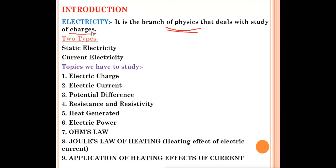Whenever the word electricity comes, you should remember the word 'charges' — positive charges and negative charges. Electricity means charges; it's a branch of science which deals with the study of charges. There are two types of electricity: static electricity and current electricity.